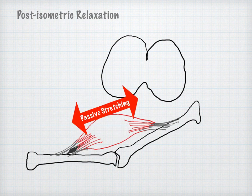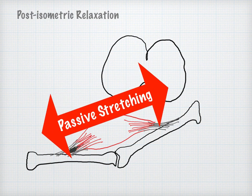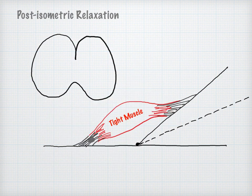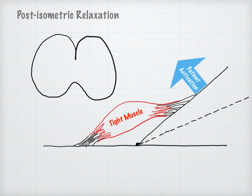during which passive stretching may be performed without encountering strong myotactic reflex opposition. The patient is asked to activate the tight muscle side of the dysfunction in an attempt to move the joint away from the restricted barrier, the direction of ease.